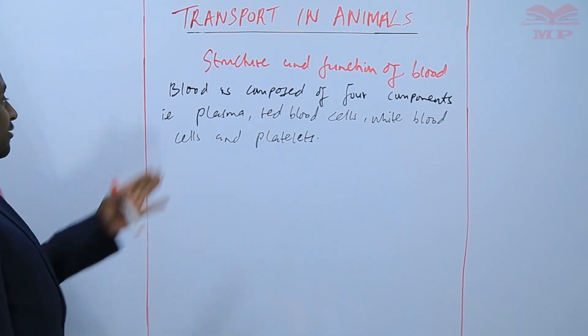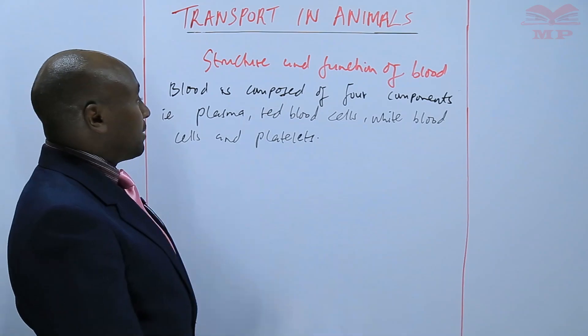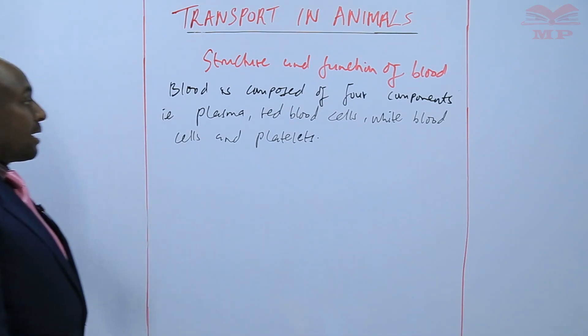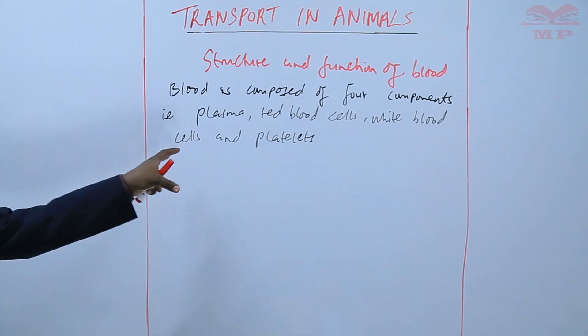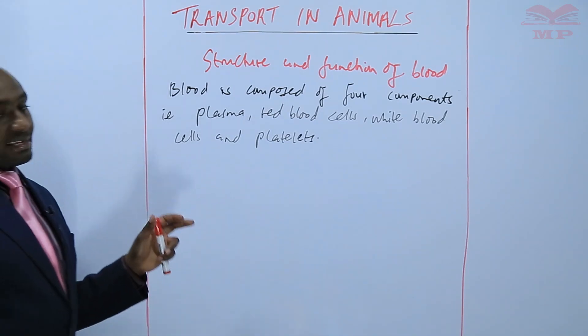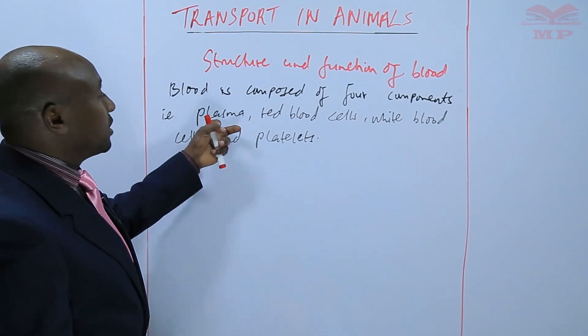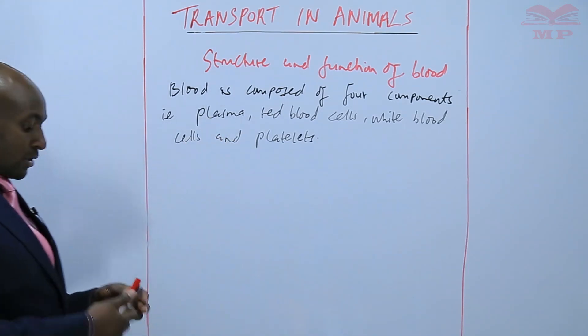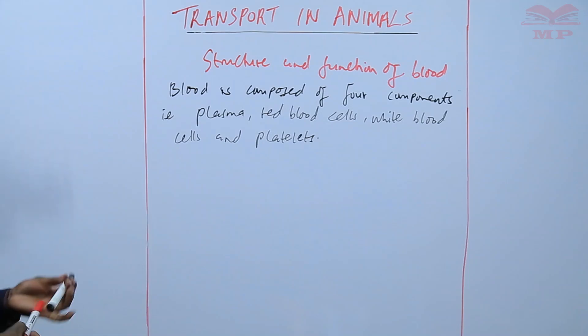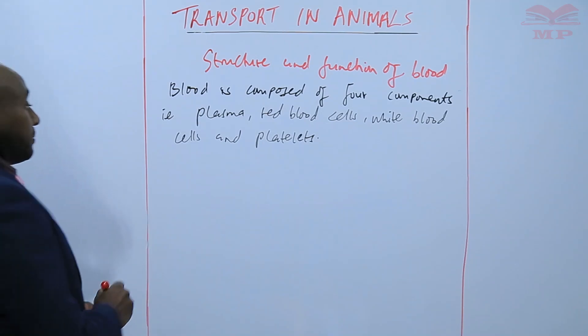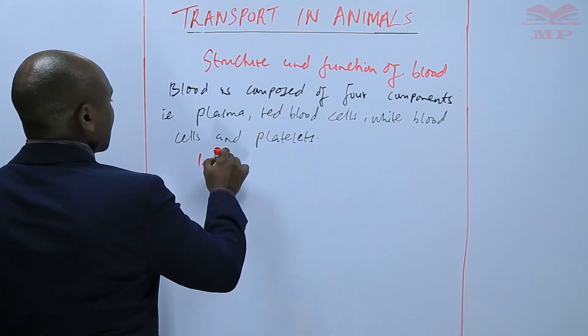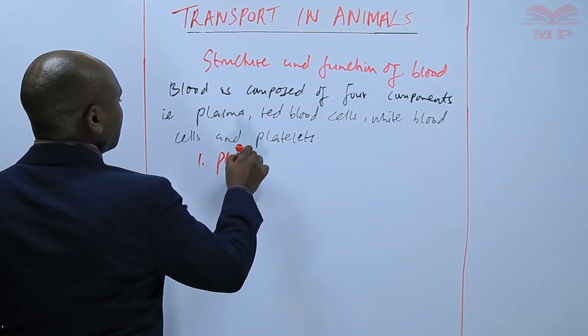The plasma is the fluid part of the blood, but the others are cells that are found within the plasma. So we're going to look at each one of them, starting with the plasma.